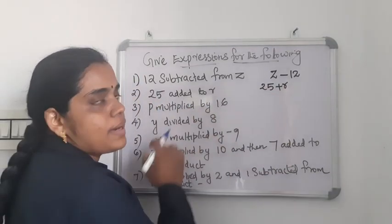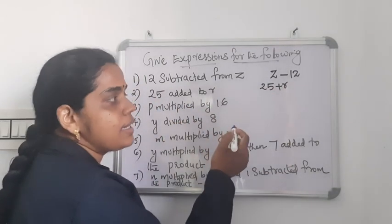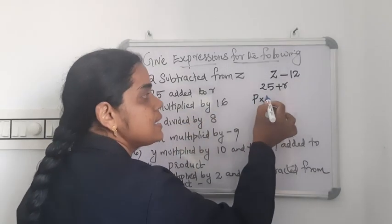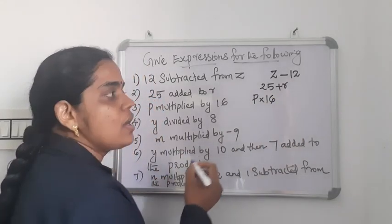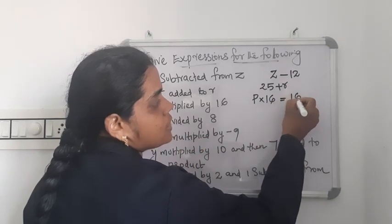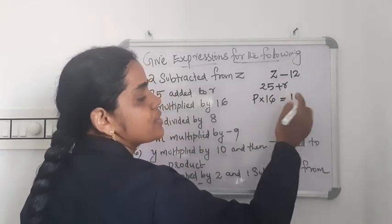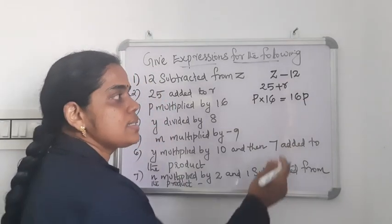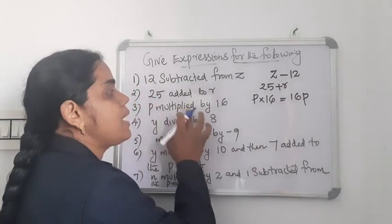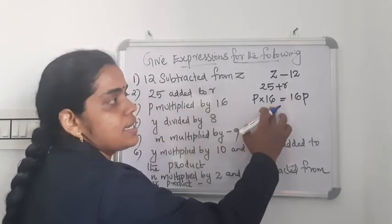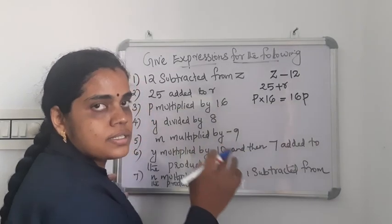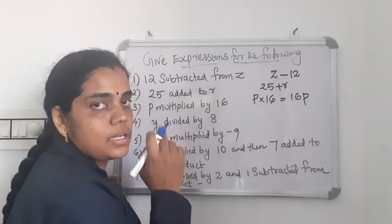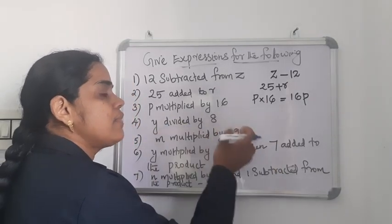P multiplied by 16 — here the operation is multiplication. Usually P multiplied by 16 means P into 16, but in algebra we do not use the multiplication symbol. We write the constant first and the variable second, directly as 16P. This is the standard way in higher classes — constant first, variable second, with no multiplication symbol.